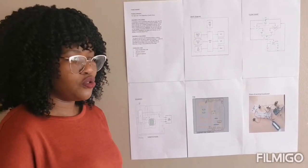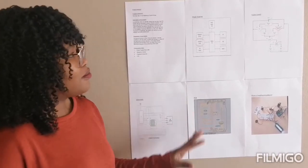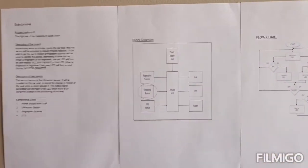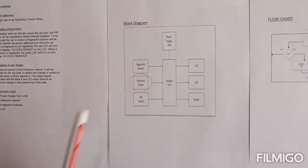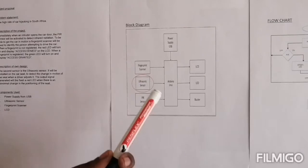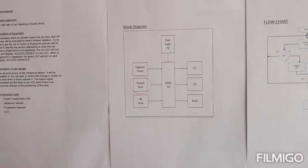Let me take you through my block diagram. I have my three inputs: the fingerprint sensor, ultrasonic sensor, the PIR sensor, the Arduino, and my three outputs: LCD, LED, and the buzzer, which are all powered by the USB.